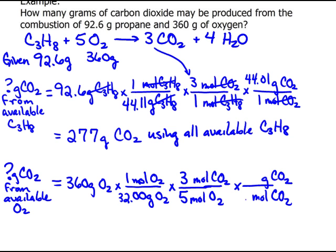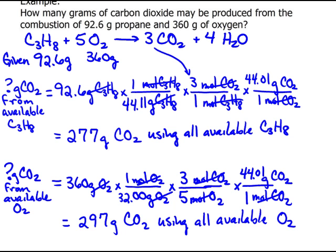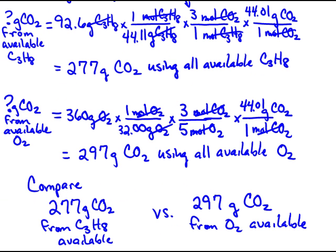And then I need to do the final step, which is convert the moles of CO2 to grams of CO2. And just make sure that all my units do what I wanted. And now I have the two numbers I need to compare. So comparing these two values, the 277 versus the 297, the 277 is the smaller amount.